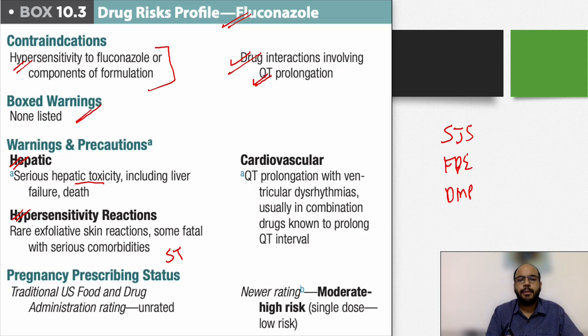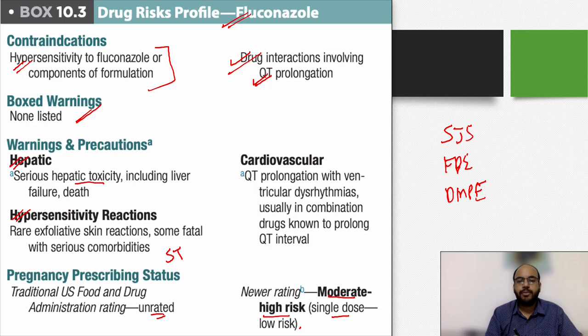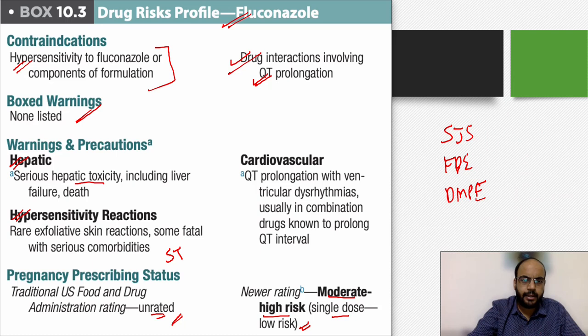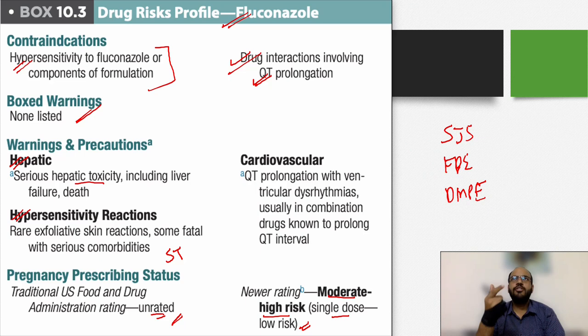The pregnancy prescribing status: the older classification is unrated, while the newer rating is moderate to higher risk. However, a single dose of fluconazole for uncomplicated vulvovaginal candidiasis carries a low-risk rating. For the key side effect profile to mention: liver damage, cardiac effects from QT prolongation and arrhythmias, hypersensitivity reactions like SJS and FDE, and pregnancy status as moderate-to-high risk except single-dose which is low risk.